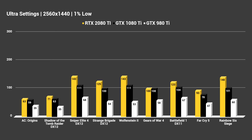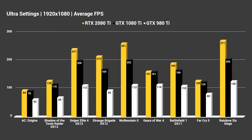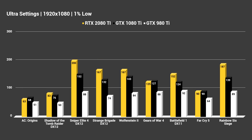Looking at 1080p averages, the CPU bottleneck issue is evident even with the processor running at 4.9GHz. In several games, the 2080Ti and 1080Ti are within just a couple of frames of each other — like Assassin's Creed Origins and Gears of War 4, which got the exact same frame rate at 1080p ultra. That's purely a CPU bottleneck. Just a couple of years ago, you'd have had to run a game at 720p on low settings to introduce a CPU bottleneck — now we're seeing it at ultra settings. The same pattern appears in 1080p 1% lows, with the 1080Ti and 2080Ti neck and neck.